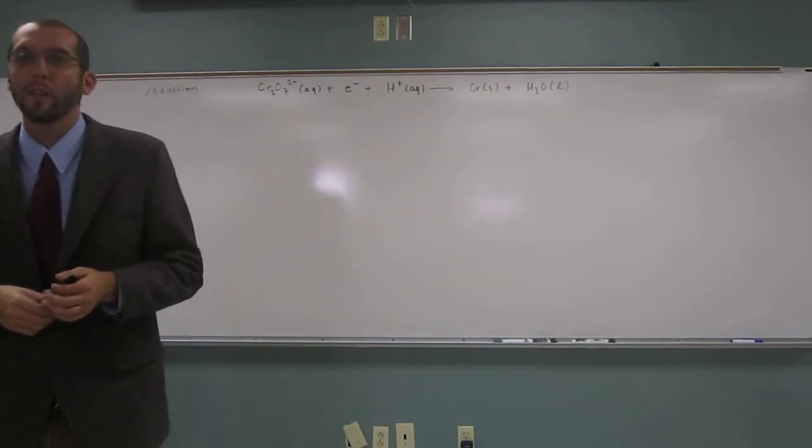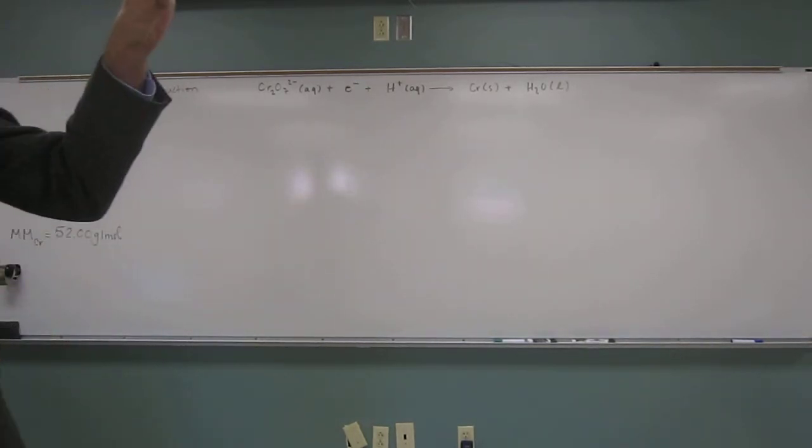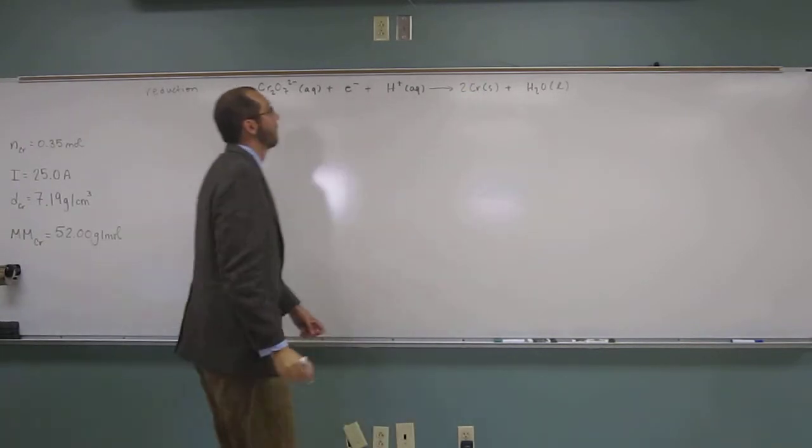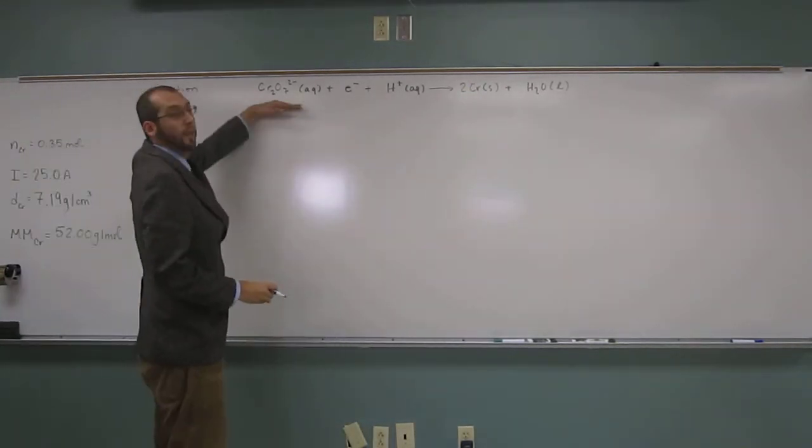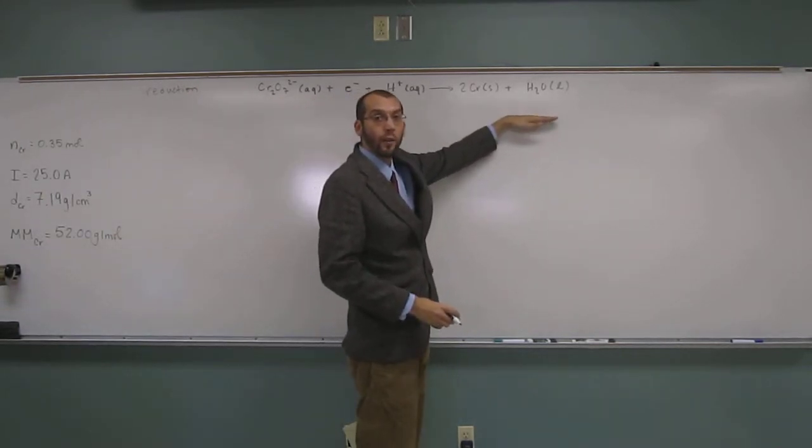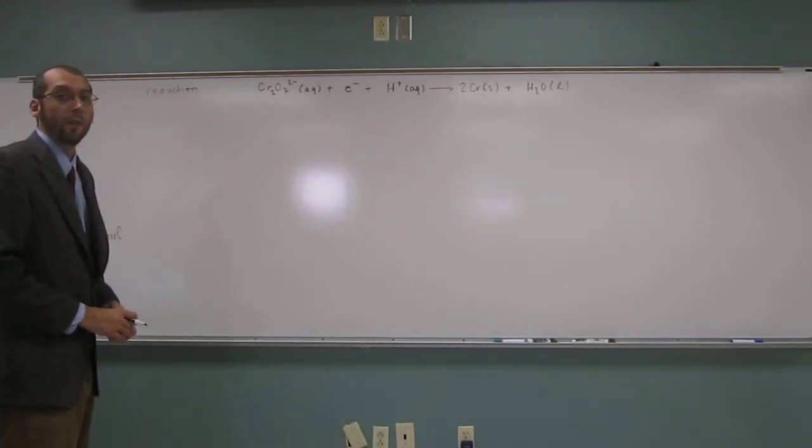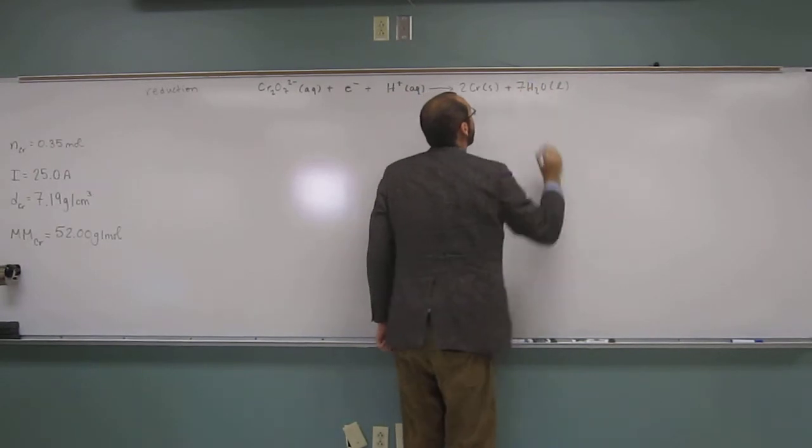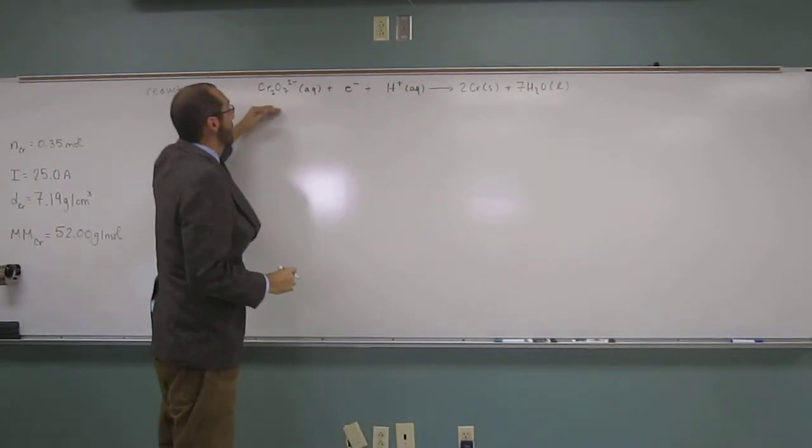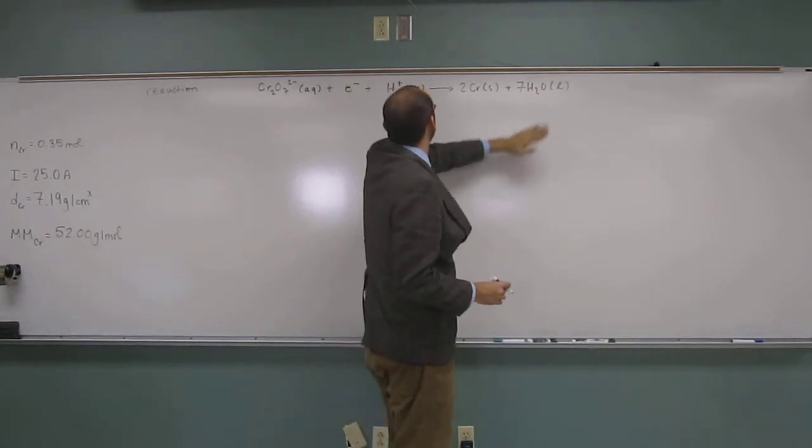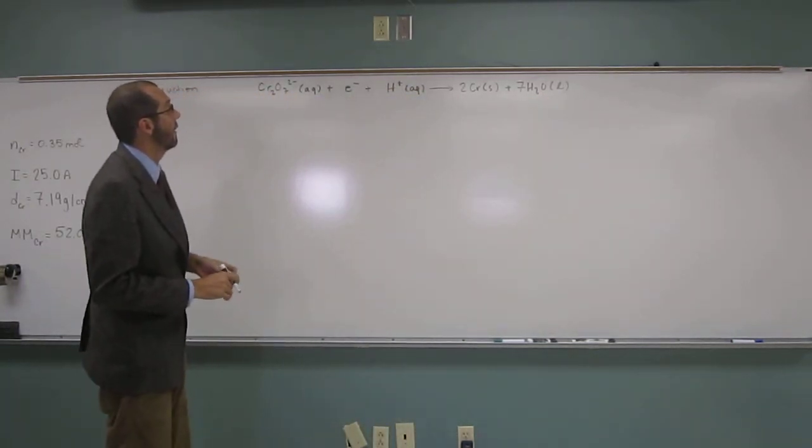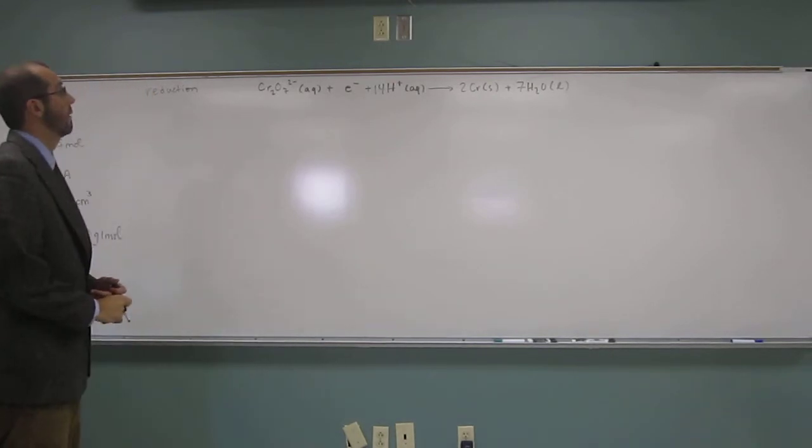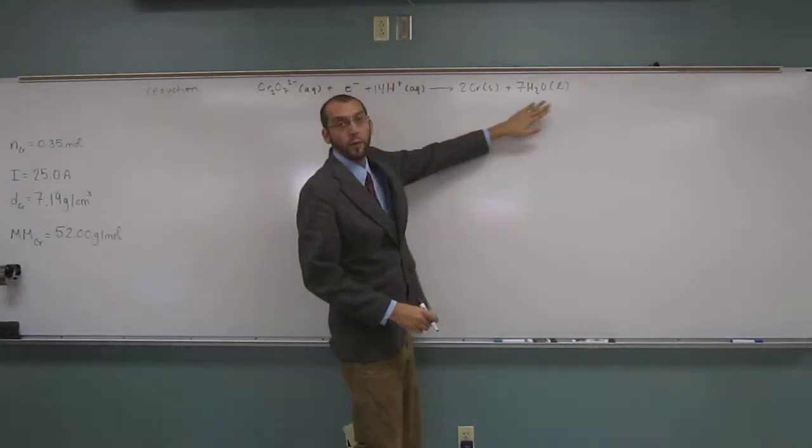So, how do we balance our half reaction? We're going to first balance the non-oxygen, non-hydrogen atoms. So, that's chromium. We've got two over here, none over here. So, we're going to put a two down. So, now we see, we've got seven oxygens over here and only one over here. So, what are we going to do? We're going to multiply that water by seven, right? So, we've got a seven there now. So, we've got seven oxygens there, seven oxygens there. Now, we've got 14 hydrogen here and only one hydrogen on the other side, right? So, we're going to have to add 13 more or multiply that by 14, right? So, now we have 14 here, 14 here.